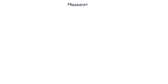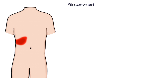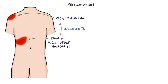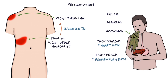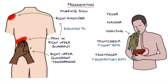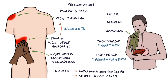The main presenting symptom of cholecystitis is pain in the right upper quadrant, which may radiate to the right shoulder. Other features include fever, nausea, vomiting, tachycardia, tachypnea, right upper quadrant tenderness, Murphy sign, and raised inflammatory markers and white blood cells on blood tests.